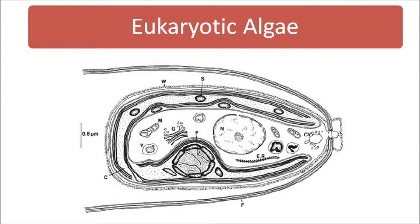Coming on to the eukaryotic algae. This image shows a drawing of a cell of the green alga Chlamydomonas, showing the organelles present in a eukaryotic algal cell. C stands for chloroplast, CV for contractile vacuole, ER for endoplasmic reticulum, F for flagella, G for Golgi body, M for mitochondrion, N for nucleus, P for pyrenoid, S for starch, V for vacuole, and W for wall.